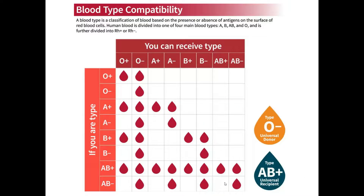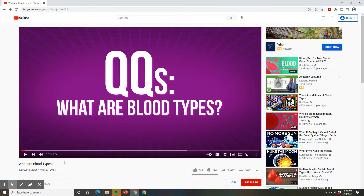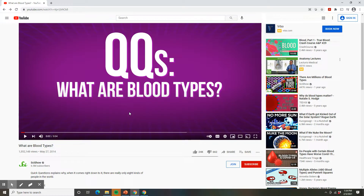That ends today's lesson. I'm going to leave this chart on the screen so you can take a look at it, because I often get a lot of questions about who can donate blood — for example, if you are B positive, who can receive your blood? This helps answer some of those questions. Also, if you're not clear on blood typing and want more information, go to YouTube and type in 'what are blood types' — the SciShow has a really good informative video on the different blood types and how we can determine our own blood type. Definitely check that out if you're interested.